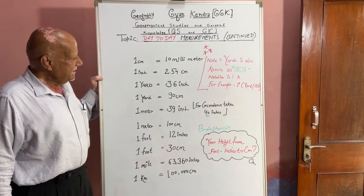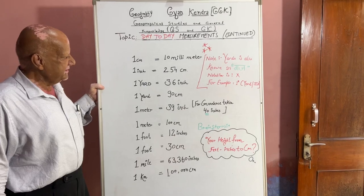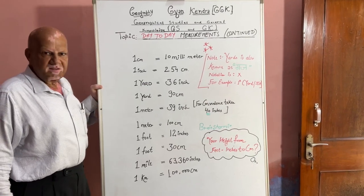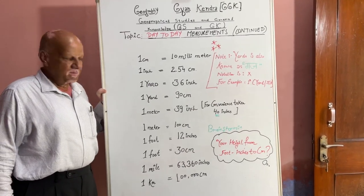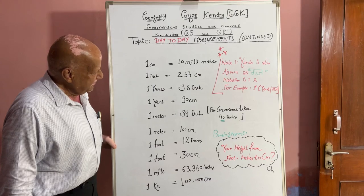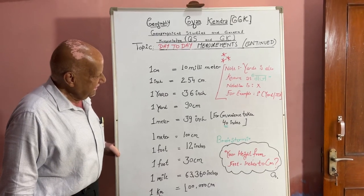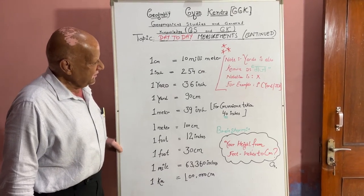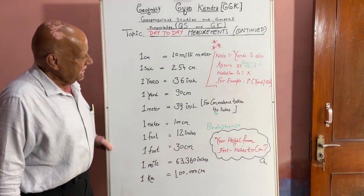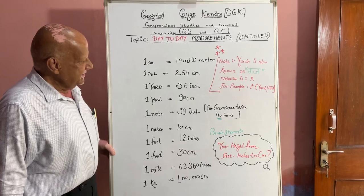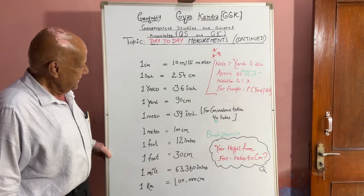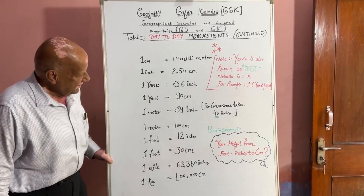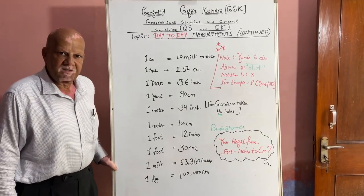1 yard is equal to 36 inches; 1 yard is equal to 90 cm. 1 meter is equal to 39 inches. For convenience of conversion, 40 inches is taken as 1 meter. 1 meter is equal to 100 cm.